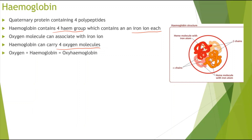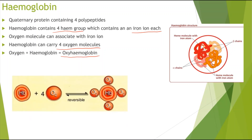When oxygen and hemoglobin join together, this is called oxyhemoglobin. This is a reversible reaction — when oxyhemoglobin is formed, the oxygen molecules can be unloaded or dissociated, returning to hemoglobin and free oxygen molecules.